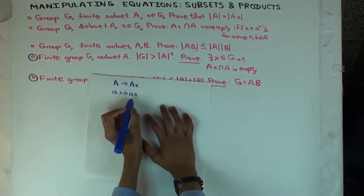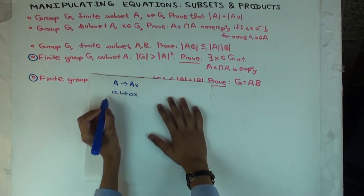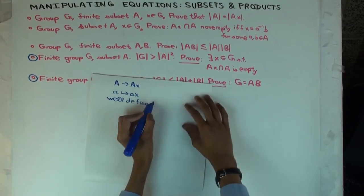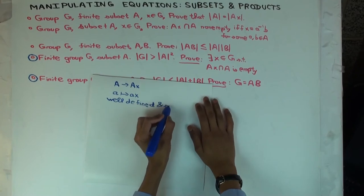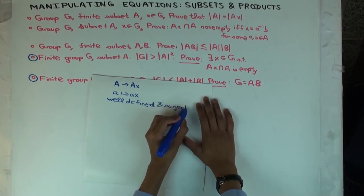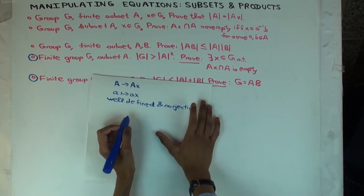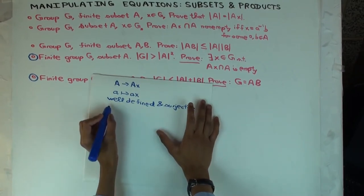Is it surjective? Yes, because again, the definition of AX is the thing which can be written in this form. So it's well defined and surjective. So what do we need to show to complete the proof that it's bijective? Injective.